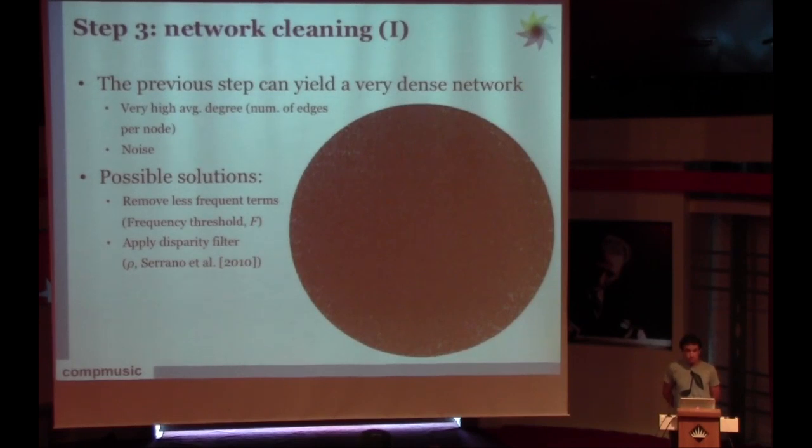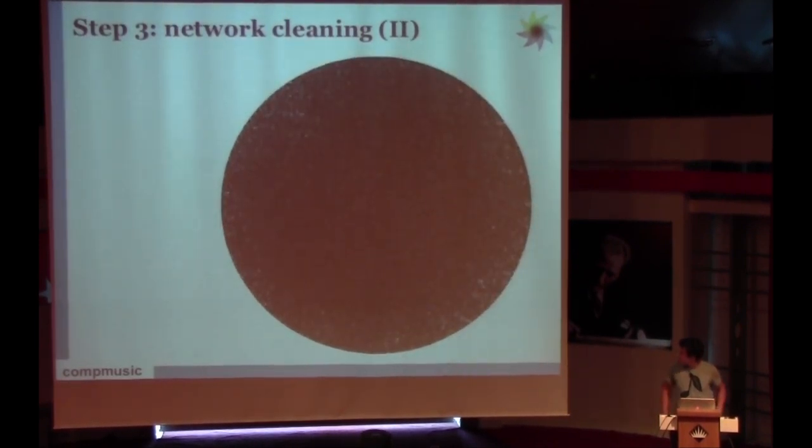Some possible solutions to filter this network is by removing less frequent terms. That's how we include or define a new parameter called frequency threshold. For example, we can say that words that appear less than five times in the forum post, don't consider them. And then, even though the network is still dense, you can apply disparity filter, which is a filter that just removes irrelevant edges in the network.